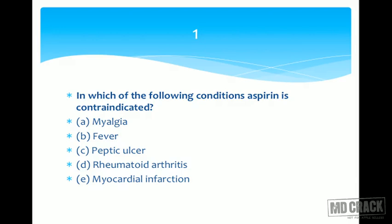Aspirin has an anti-inflammatory effect; it is a non-steroidal anti-inflammatory drug, so it's not contraindicated in rheumatoid arthritis. Myocardial infarction — we do use low-dose aspirin in myocardial infarction, no question about it. So the answer is peptic ulcer. Aspirin is contraindicated in peptic ulcer.